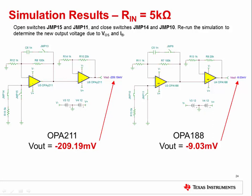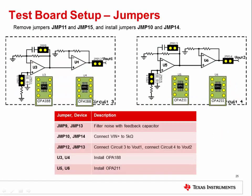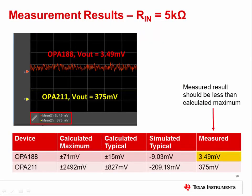In experiment two, the OPA188 has a measured output voltage of 3.49 millivolts and the OPA211 has a measured output voltage of 375 millivolts. You may have different results in your experiment. How did the measured and simulated results compare to the hand-calculated results? In this example, the OPA211 output was greater than the calculated and simulated typical values, but less than the calculated maximum value. The OPA188 output was less than both the calculated and simulated typical values.